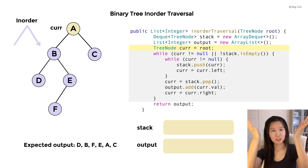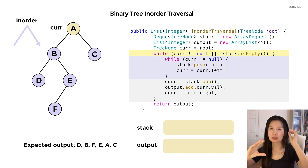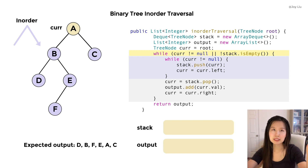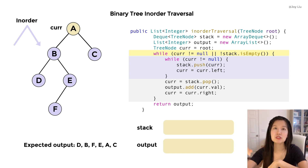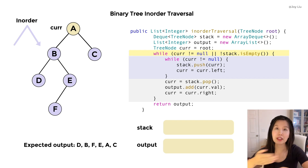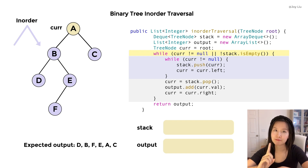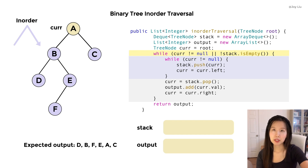Here's the main course: it's a big while loop with a small while loop. What is the condition to go inside? If the current node is not null, or if the stack is not empty, we're good to go. It's an OR condition, so we only need to meet one requirement. If at some point we don't meet both of them, that means we have all output ready to return, which is the last step.